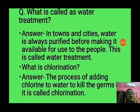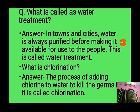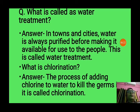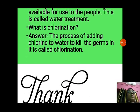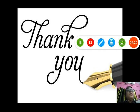What is chlorination? The process of adding chlorine to water to kill the germs is called chlorination. Chlorine gas kills the germs present in the water. At home also, we can put some chlorine tablets in drinking water to clean it by killing the germs. That is the last topic, and we will meet in the next class. Thank you, students.